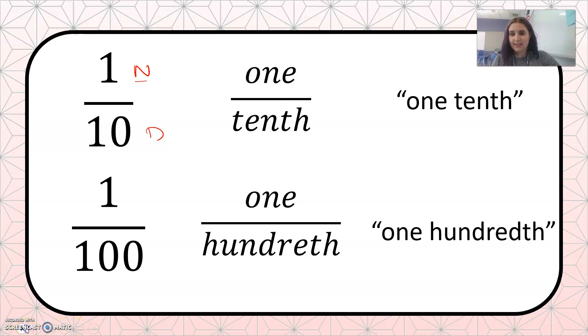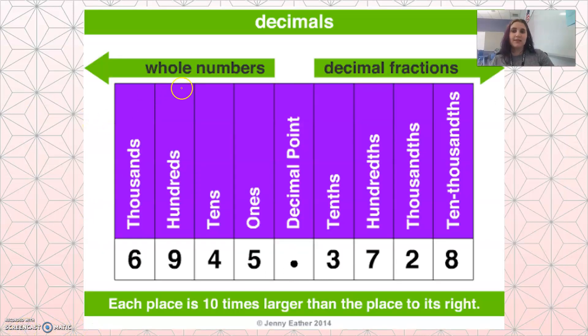So let's look at a place value chart. On the left side of a place value chart are the whole numbers. And then there's a decimal point which we usually just say point, like 5.2. And then we have the decimal fractions on the right. So those are the decimal numbers.